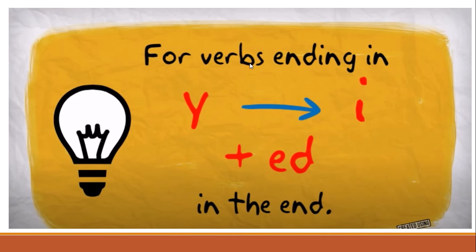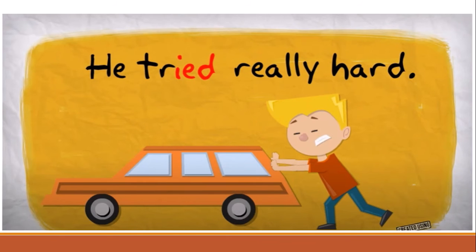Rule number three: for verbs ending in 'y', I'm going to cross out 'y' and put 'ied' — when the letter before 'y' is a consonant. Vowel letters are a, e, i, o, u. So if I don't have one of those letters before 'y', I cross out 'y' and put 'ied'. For example: 'try' — I cancel 'y' because before it I have 'r', which is a consonant, so I write 'tried'.